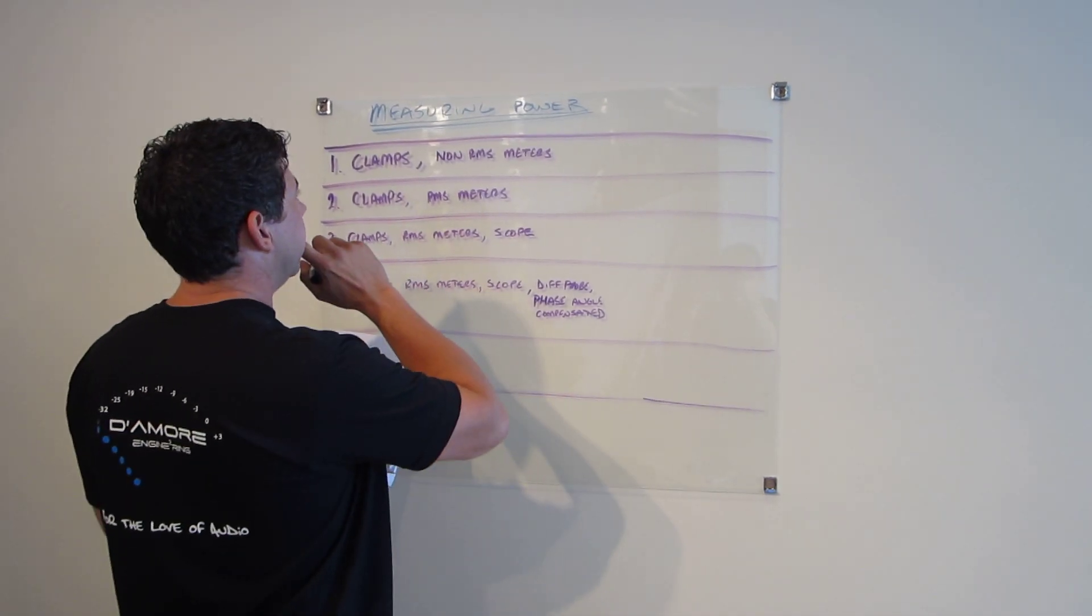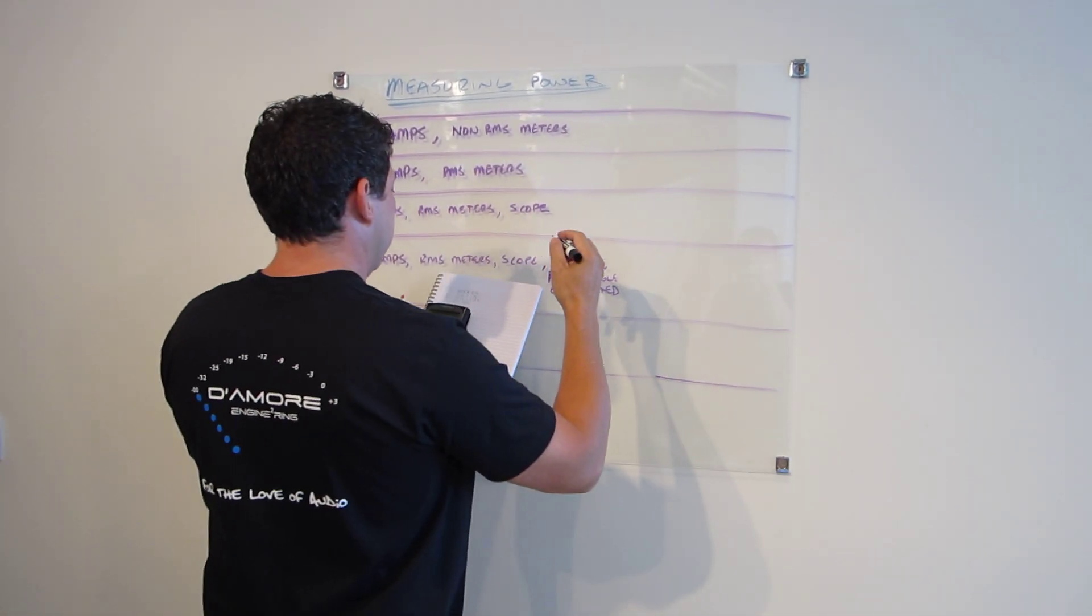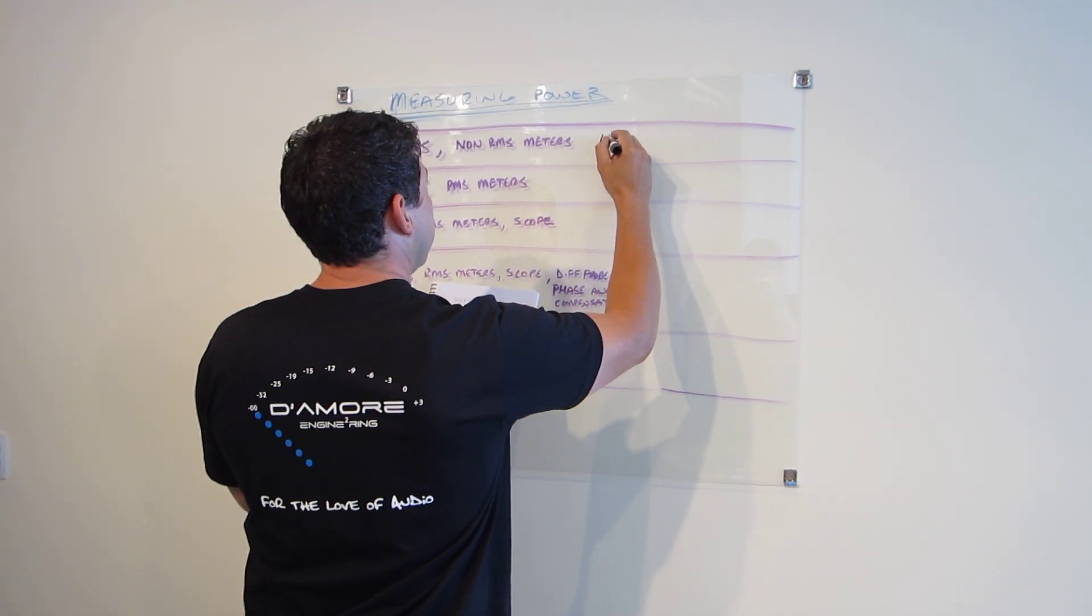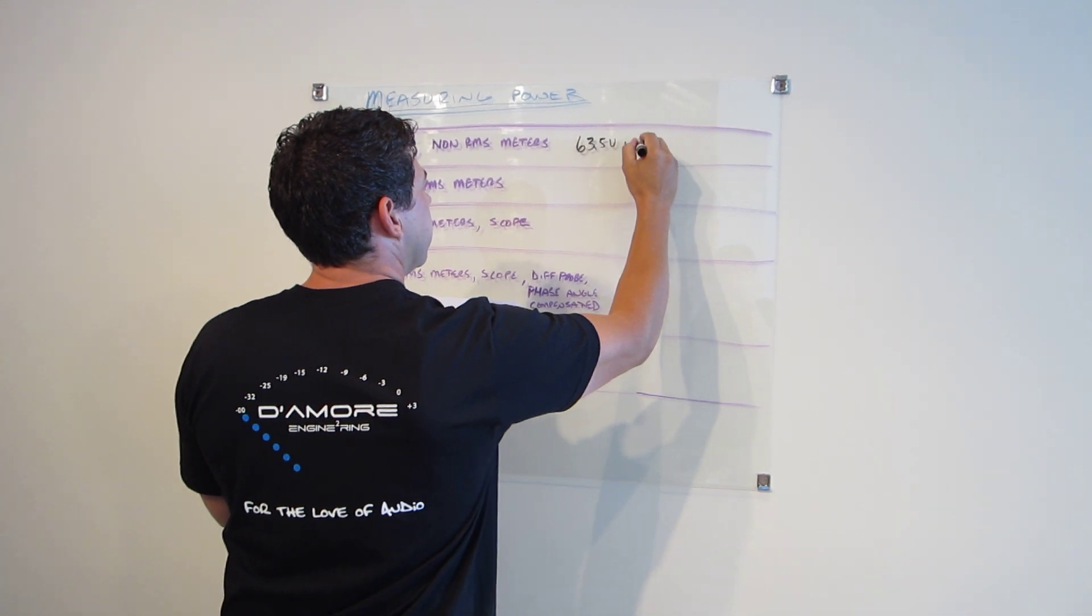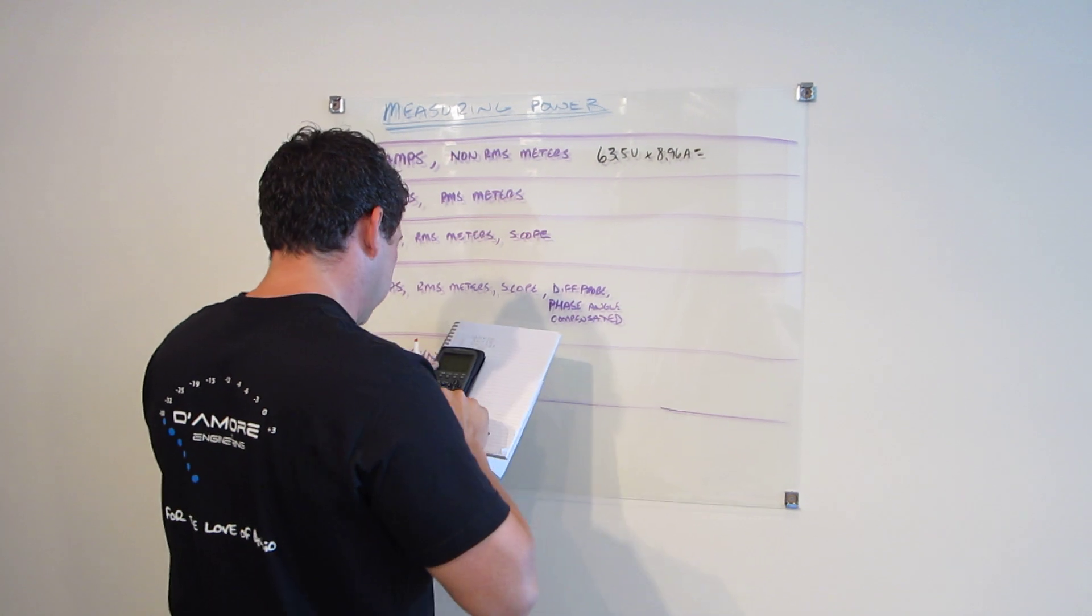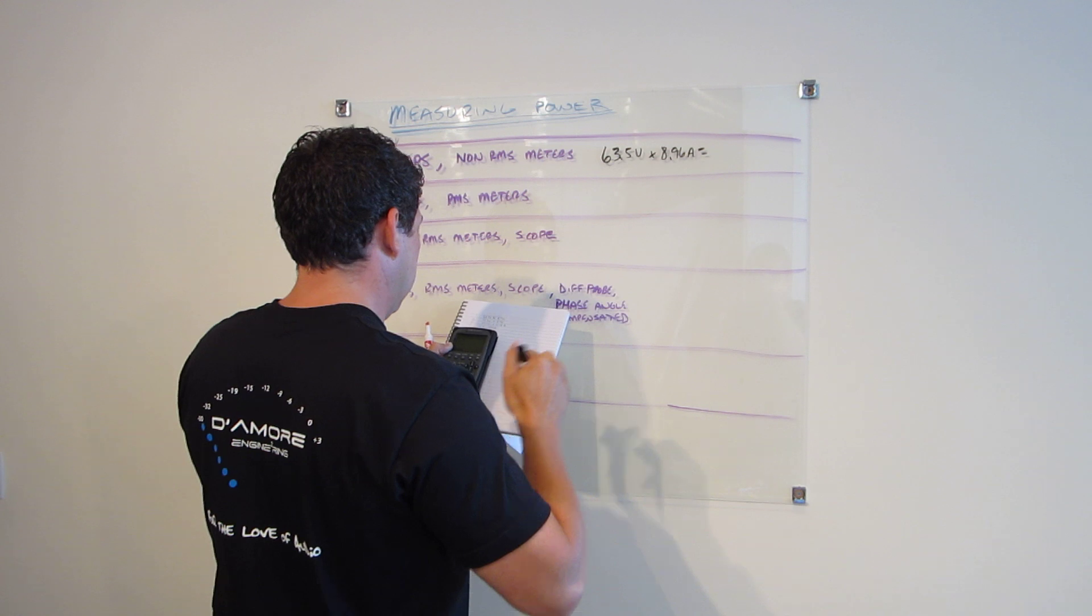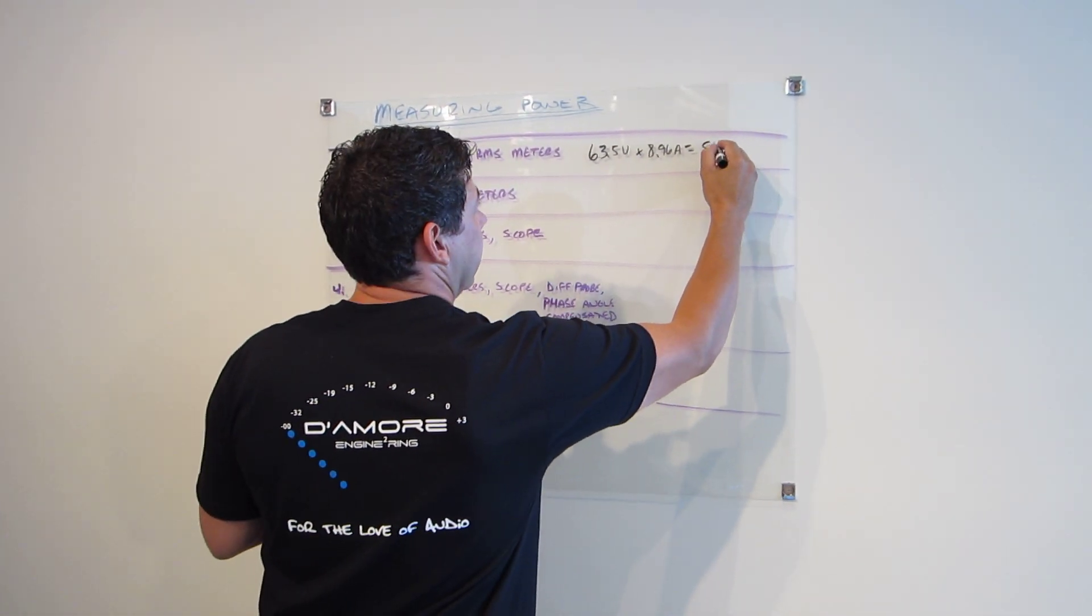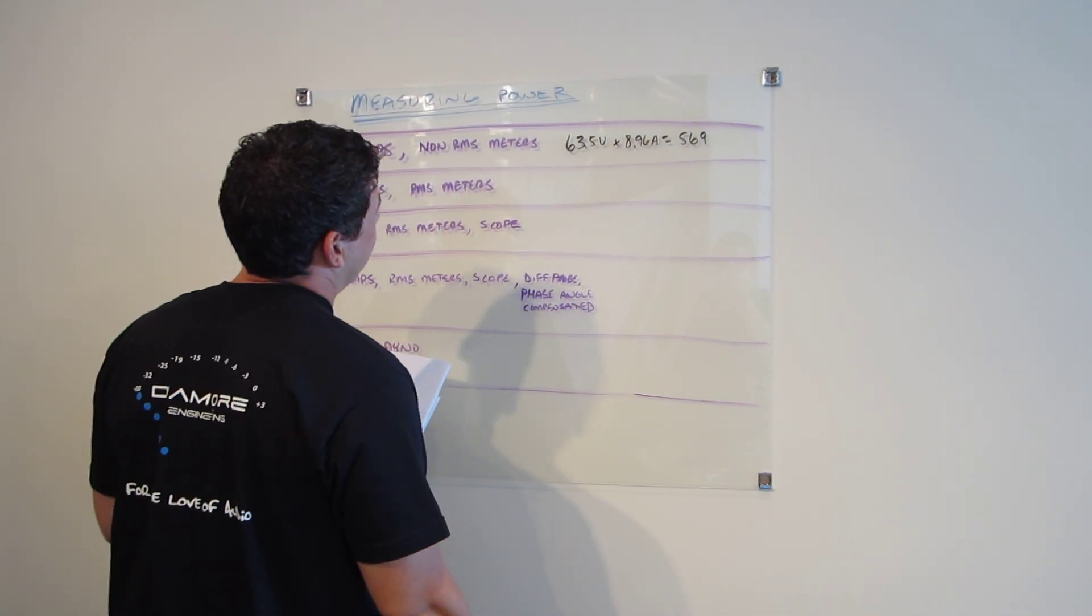Okay so on the first situation we had the non-RMS meter and the clamp and we got 63.4 volts and 8.96 amps. And the traditional way would just say oh we'll just multiply these. Well if you do that you get 569, 569 watts. It's not watts.